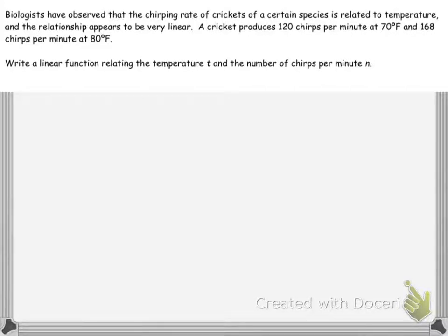Biologists have observed that the chirping rate of crickets of a certain species is related to temperature, and the relationship appears to be very linear. A cricket produces 120 chirps per minute at 70 degrees Fahrenheit and 168 chirps per minute at 80 degrees Fahrenheit. Write a linear function relating the temperature T and the number of chirps per minute N.